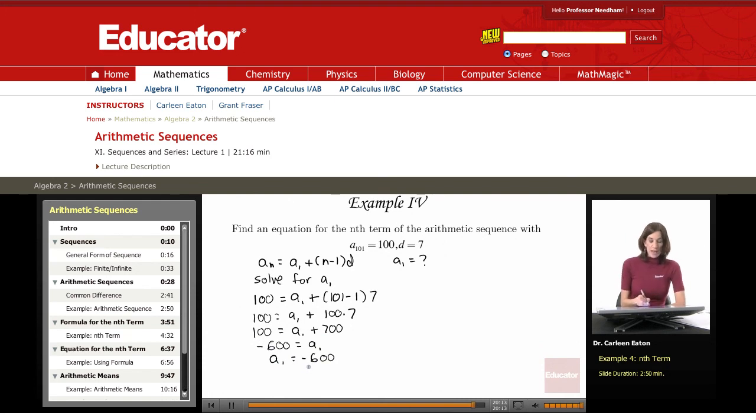Now that I know the first term, I go back again and look at that general equation for the nth term. And recall that I'm asked to find an equation, a specific equation for the nth term for this sequence. And I can do that because I know that the first term is negative 600, and the common difference, d, is equal to 7.